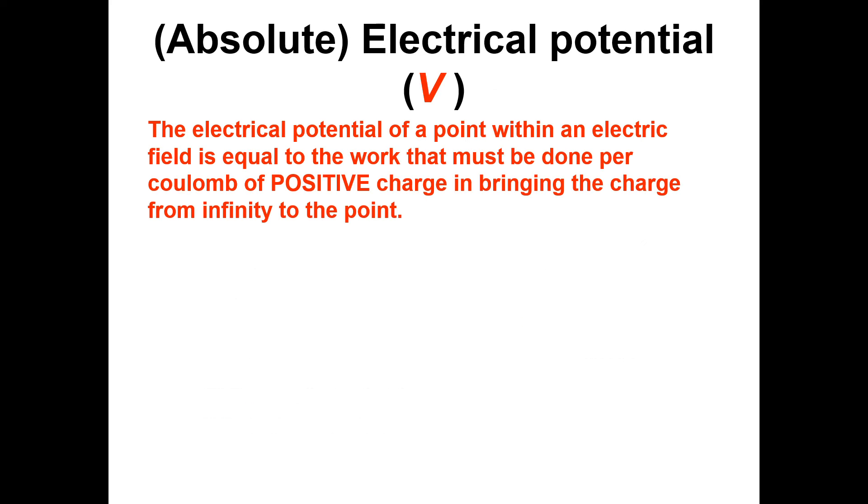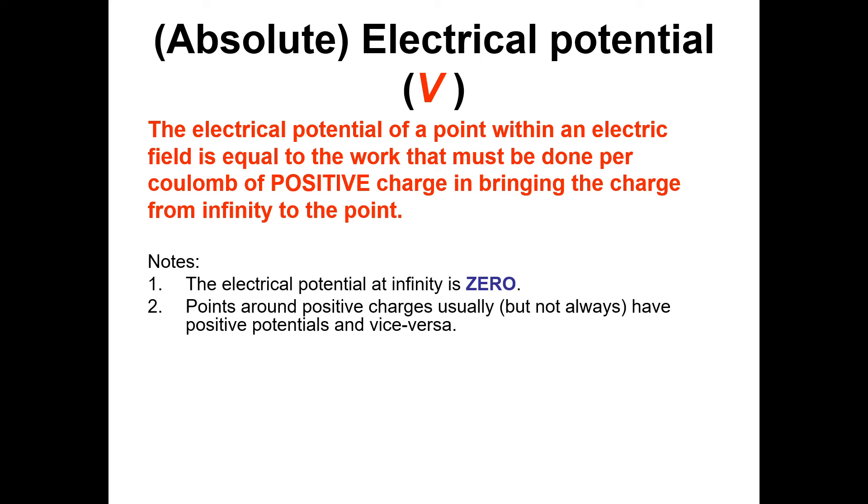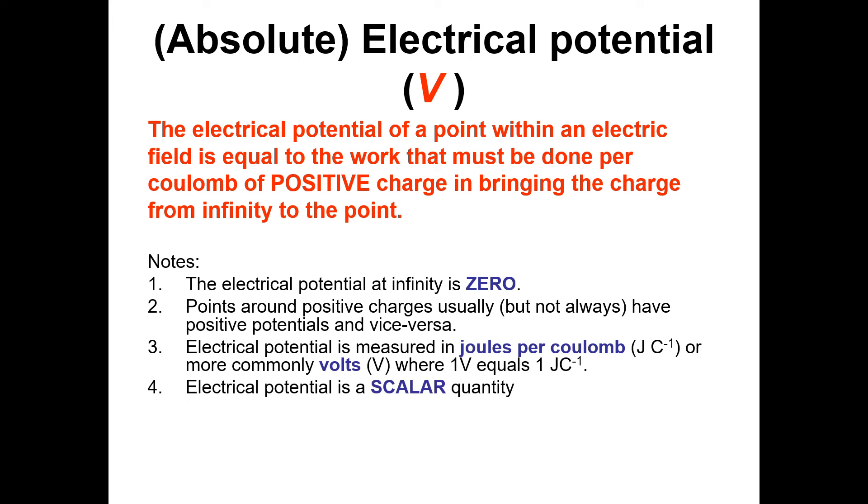Absolute electric potential then is defined as the work done per unit positive charge brought from infinity to the point. Exactly the same setup as gravitational fields. The electric potential at infinity is zero. Points around positive charges are usually, but not always, positive potentials, and vice versa. Electric potential is measured in joules per coulomb, but if you look at what that is, joules per coulomb, in terms of physics units, then it's volts essentially. When you're doing delta V, that's the potential difference, or the voltage. Electric potential, as with gravitational potential, is a scalar quantity.